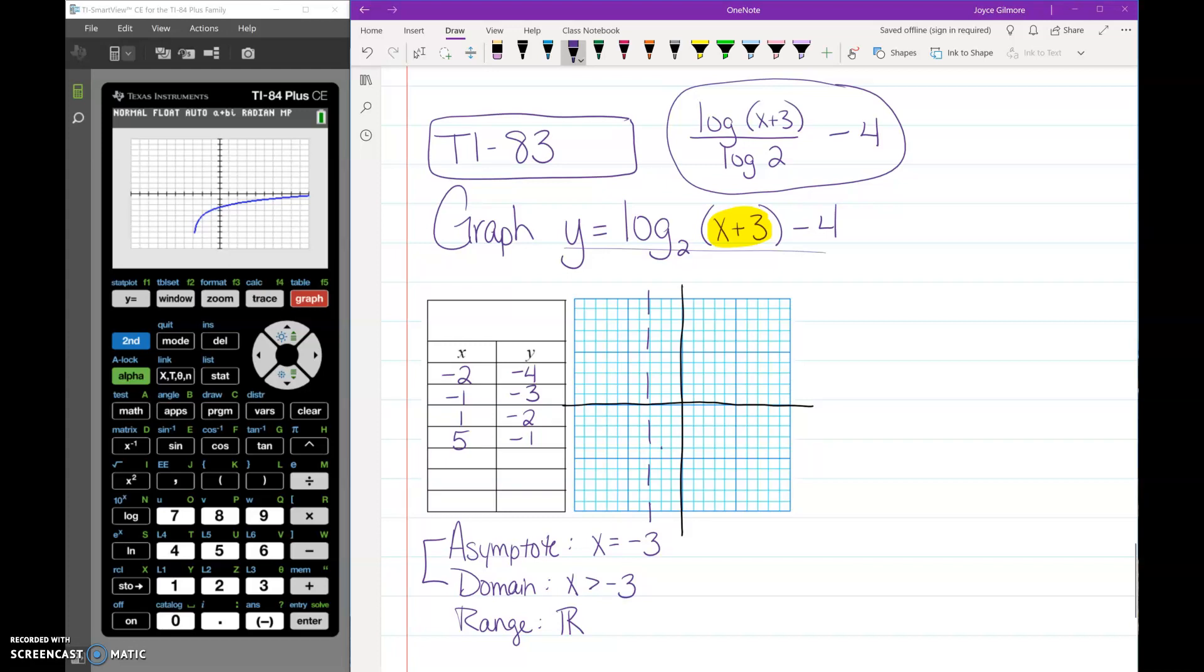Negative 2, negative 4. Negative 1, negative 3. 1, negative 2. And 5, negative 1.